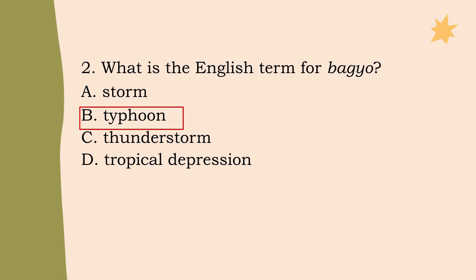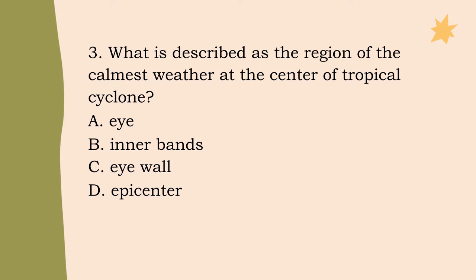Number 3: What is described as the region of the calmest weather at the center of a tropical cyclone? Letter A: eye, Letter B: inner bands, Letter C: eyewall, or Letter D: epicenter? The correct answer is Letter A, eye.